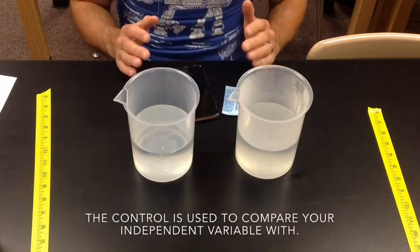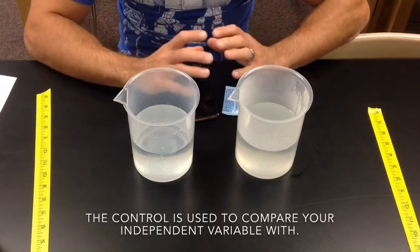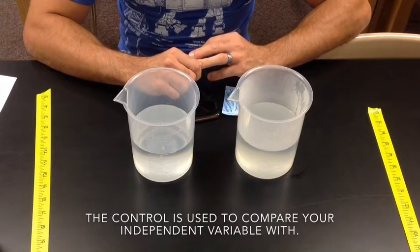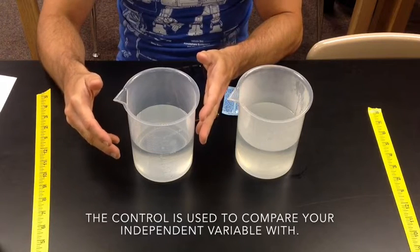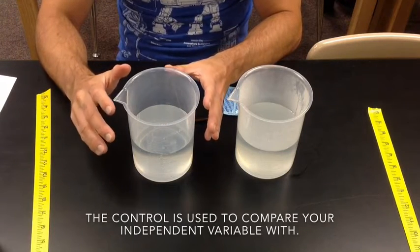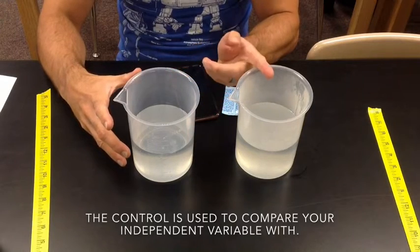So whenever you design an experiment, the true goal is to make sure that everything is kept the same except for the one variable that you're testing. So you want to create a control. This is my control. A control is basically everything is kept normal, and it's what you use to compare your variable with.